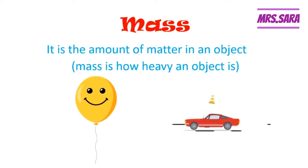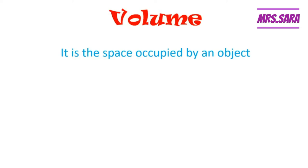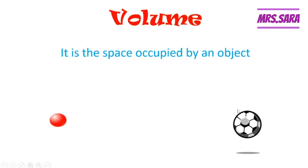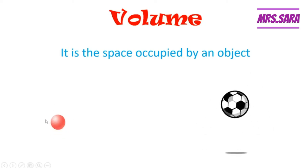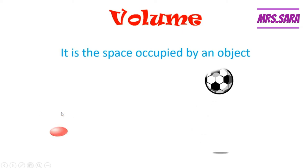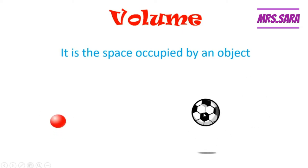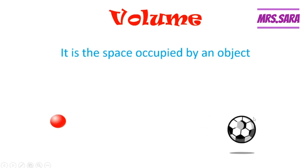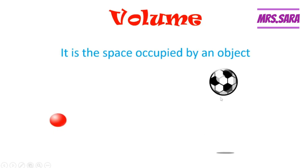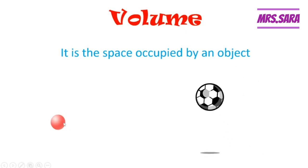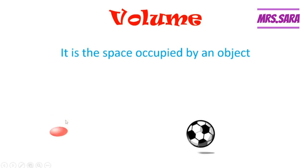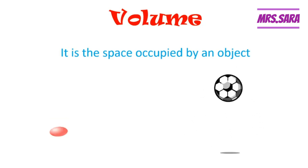Volume is the space occupied by the object — meaning the space that the object takes. Here we have two balls: a small ball and a big ball. The small ball takes a small space, and the big soccer ball takes more space. So the volume of the soccer ball is more than the volume of the small red ball. Volume is the space occupied by an object.